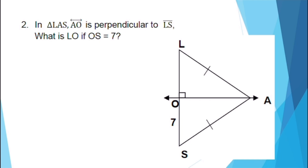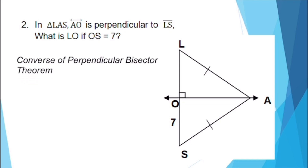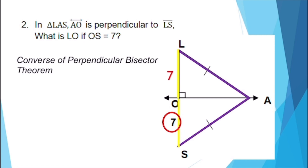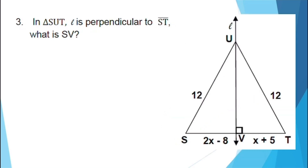For our second example, in triangle LAS, line AO is perpendicular to line segment LS. What is LO if OS equals 7? Using the converse of the perpendicular bisector theorem — if a point is equidistant from the endpoints of a segment, then it is on the perpendicular bisector — line segment LA is congruent to line segment SA, and line segment LO is congruent to line segment OS. Since OS equals 7, therefore LO equals 7.